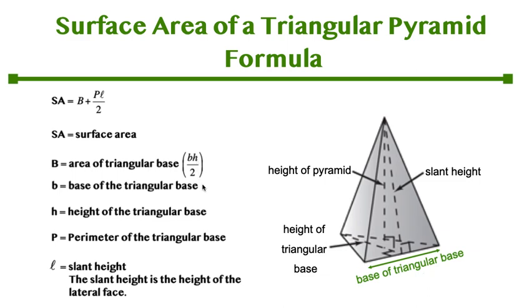Lowercase b is the base of the triangular base and lowercase h is the height of the triangular base. So right here this would be the base length of the triangular base and this dotted line right here is the height of the triangular base.